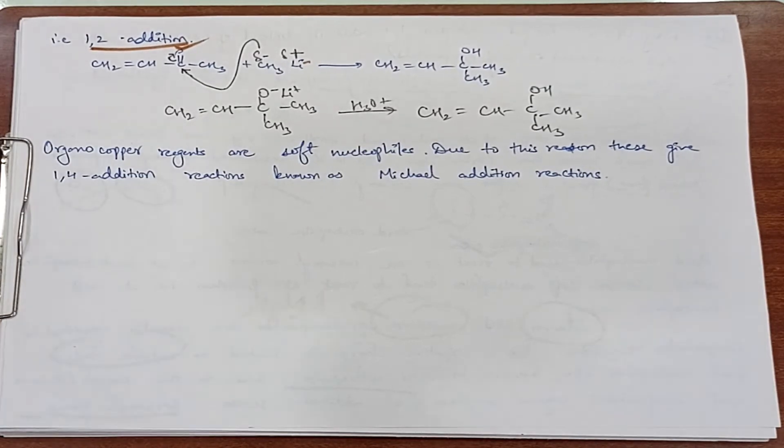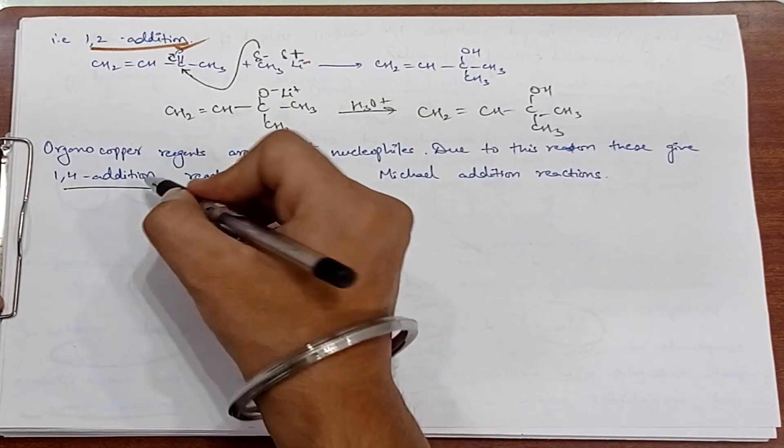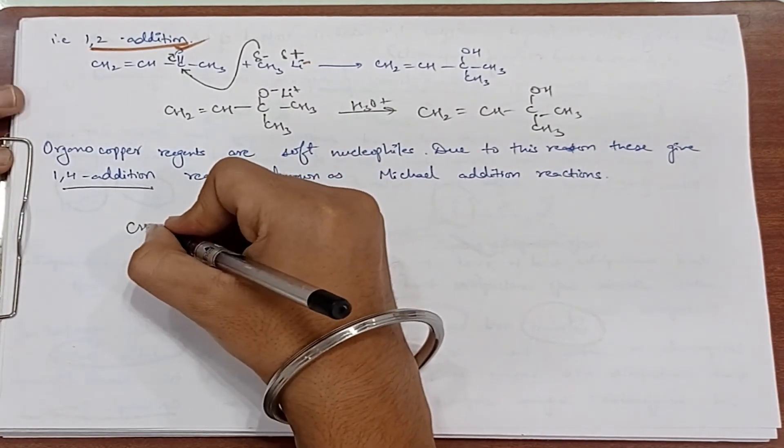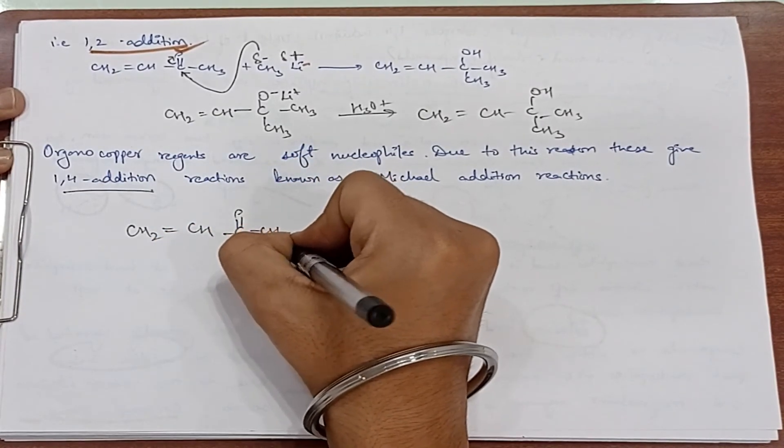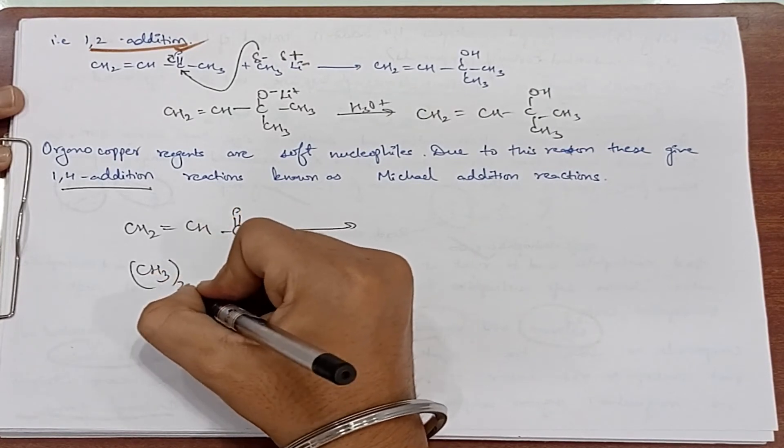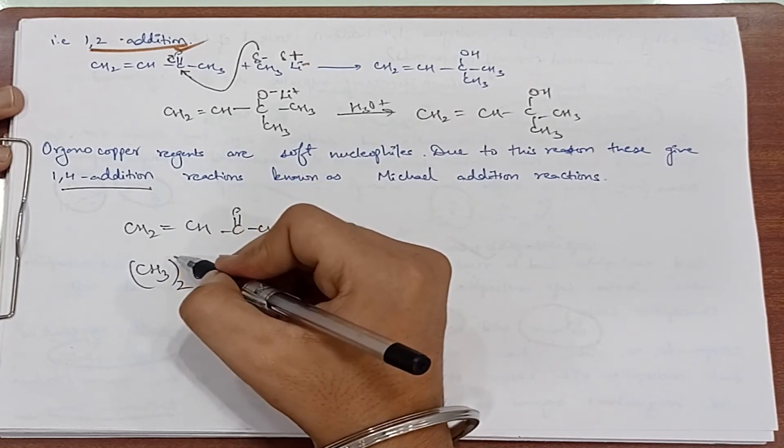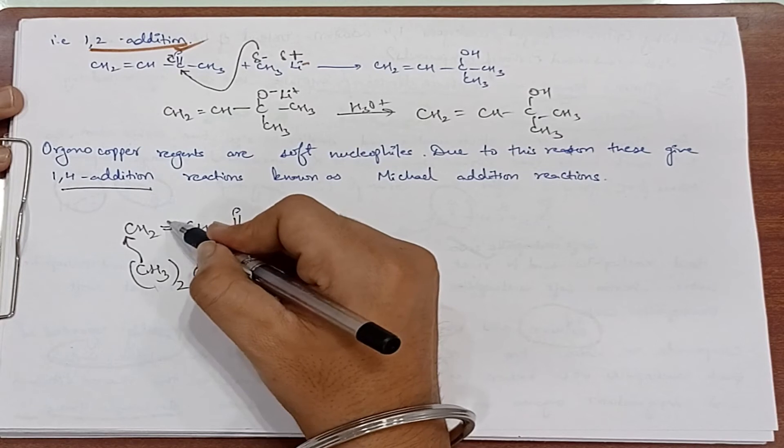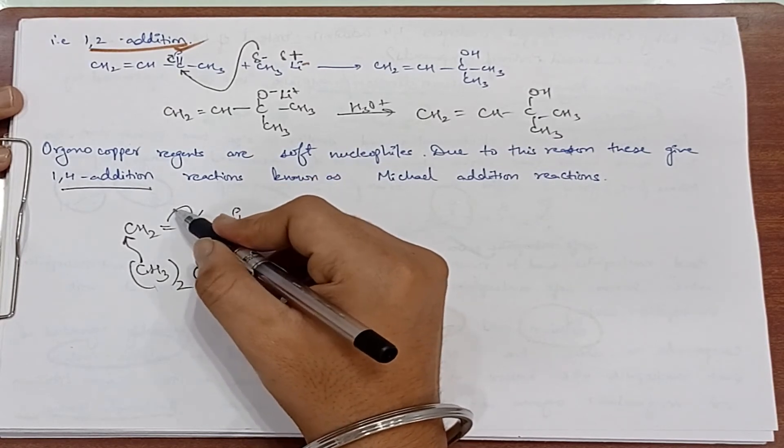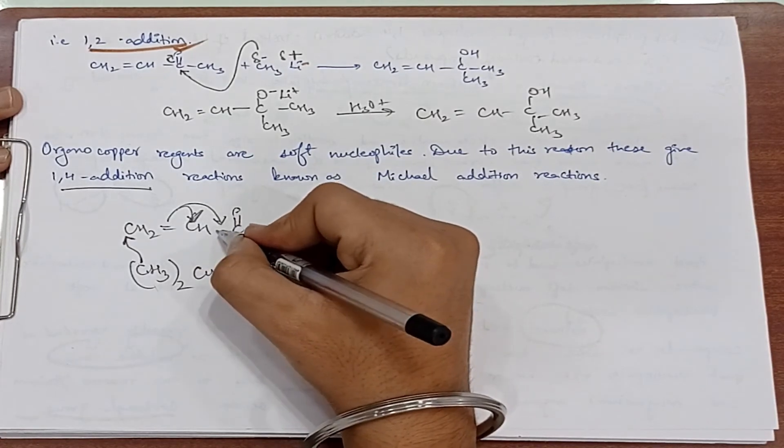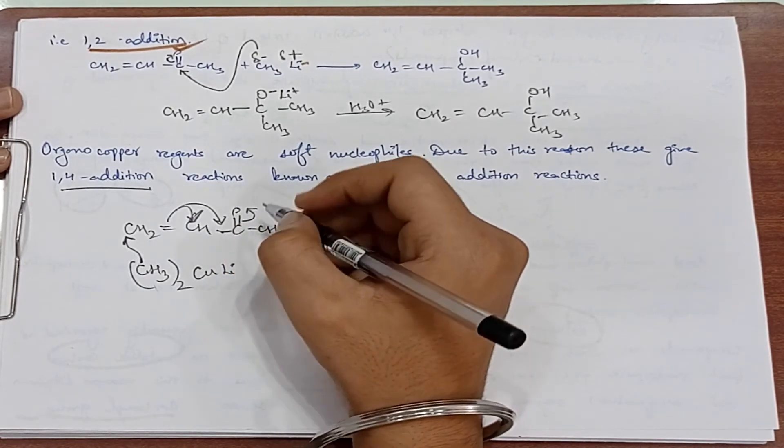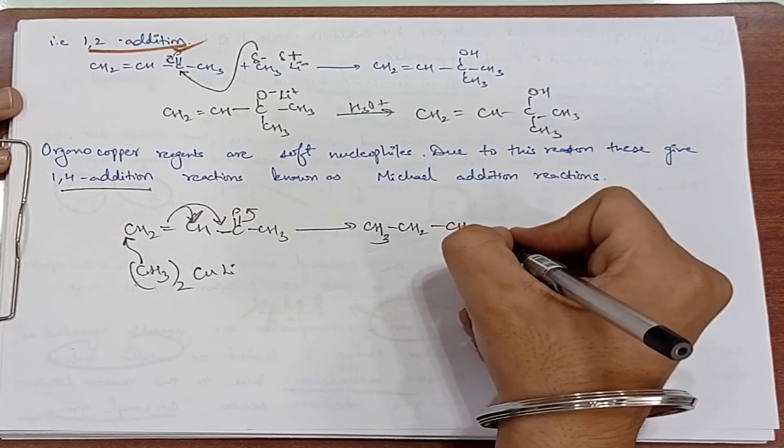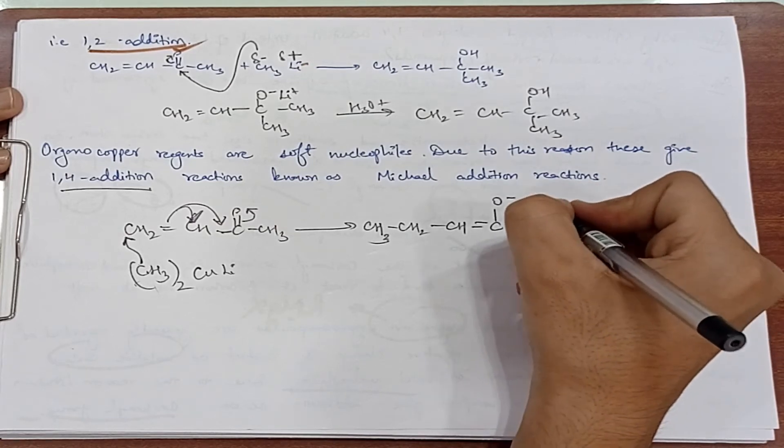Organocopper reagents are soft nucleophiles. Organocopper reagents are soft nucleophiles, known as Michael addition reaction. We have this compound CH2=CH-CO-, the same compound. We have added R2CuLi, lithium dialkyl cuprate, which has negative charge. So this soft reagent, the electrons transfer, and oxygen accepts electrons.